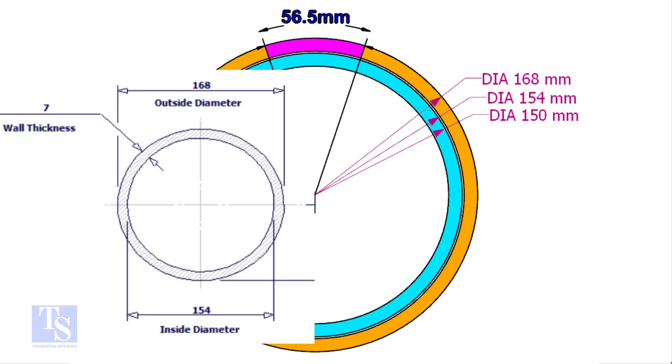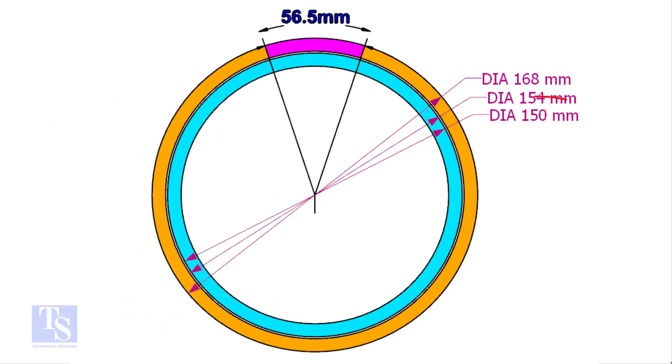The ID of a 6 inch 40 schedule pipe is 154mm. The OD of the clamp shall be 4 to 5mm less than the pipe ID. This clamp OD is 4mm smaller than the ID of the 6 inch pipe.